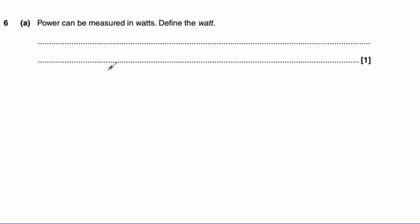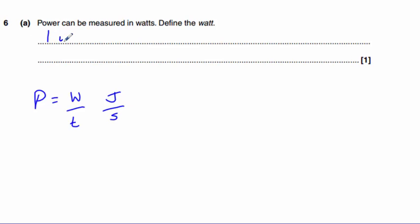Question 6 asks us to define the watt. The watt is the unit of power, and we know that power equals work or energy divided by time. The unit of work is the joule, and the unit of time is the second, so one watt is equal to one joule per second.